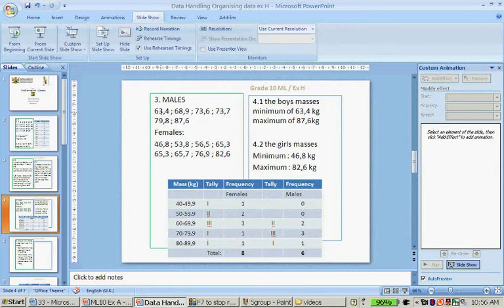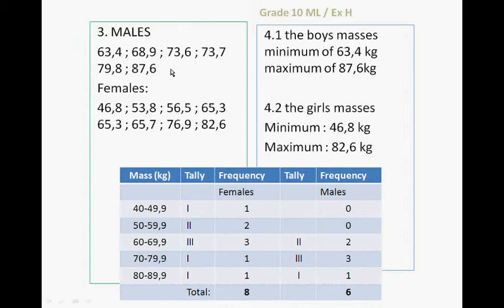The males were 63.4, 68.9, 73.6, 73.7, 76.6, 79.8 and 87.6. And the females were 46.8, 53.8, 56.5, 65.3, 65.3, 65.7, 76.9, 82.6. And just add their names to that other table.